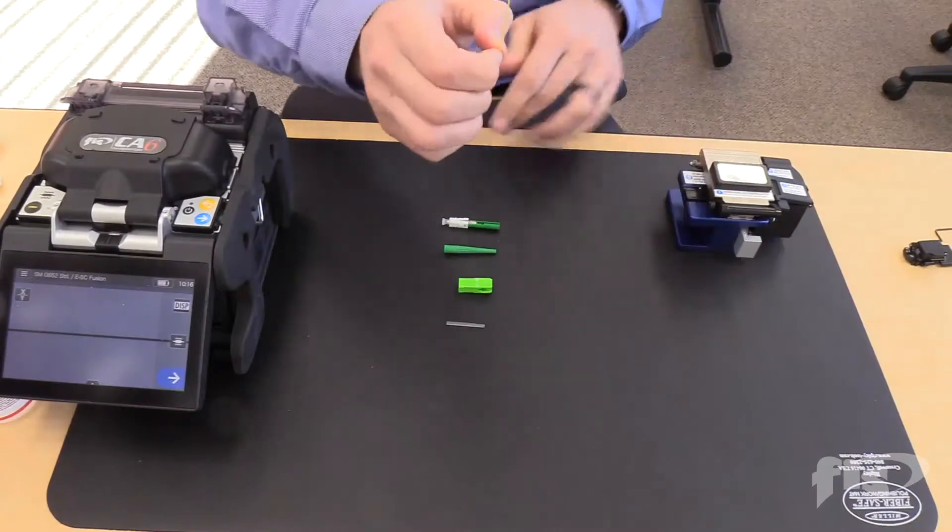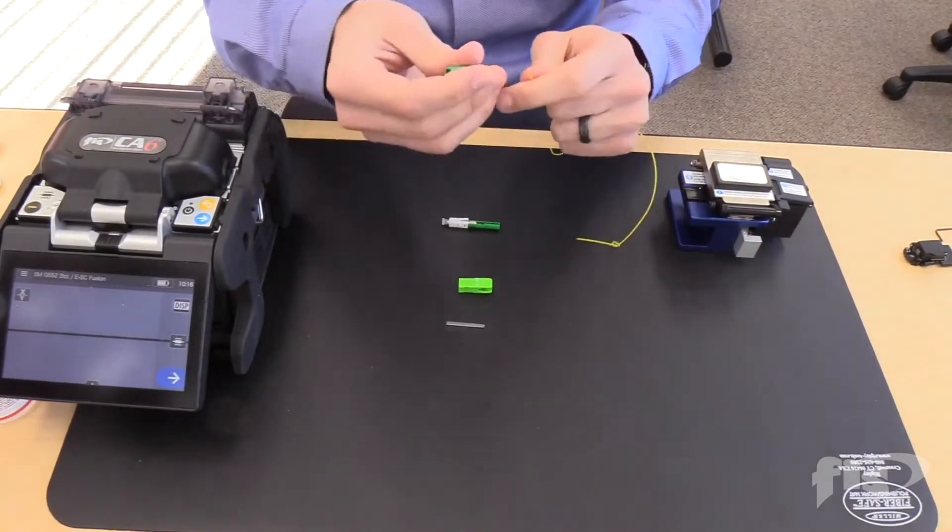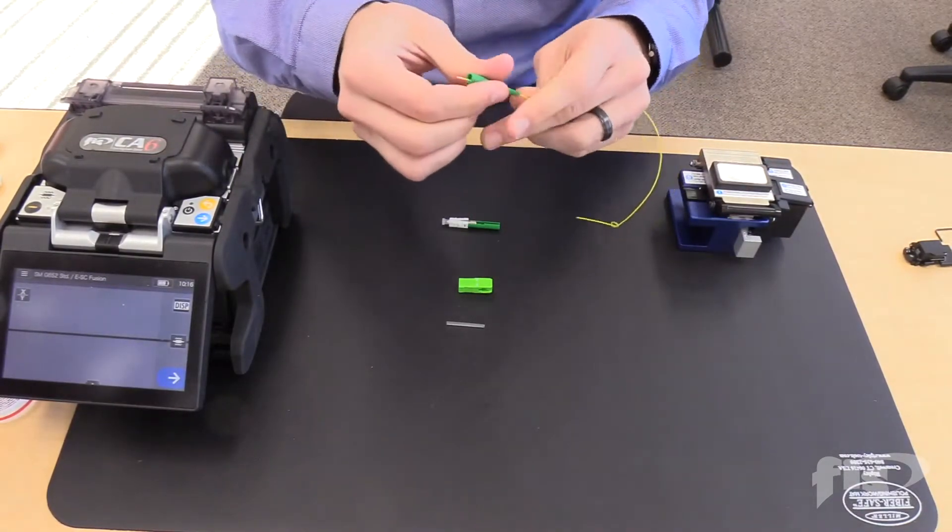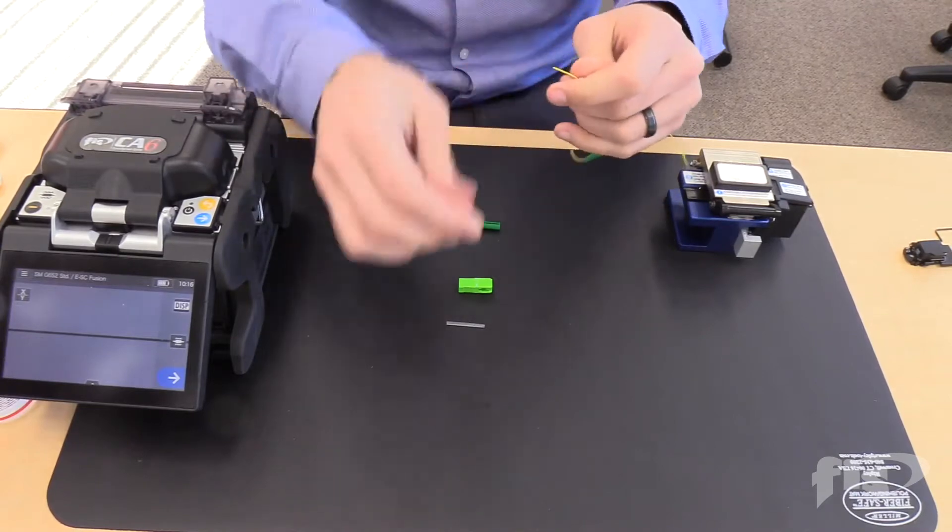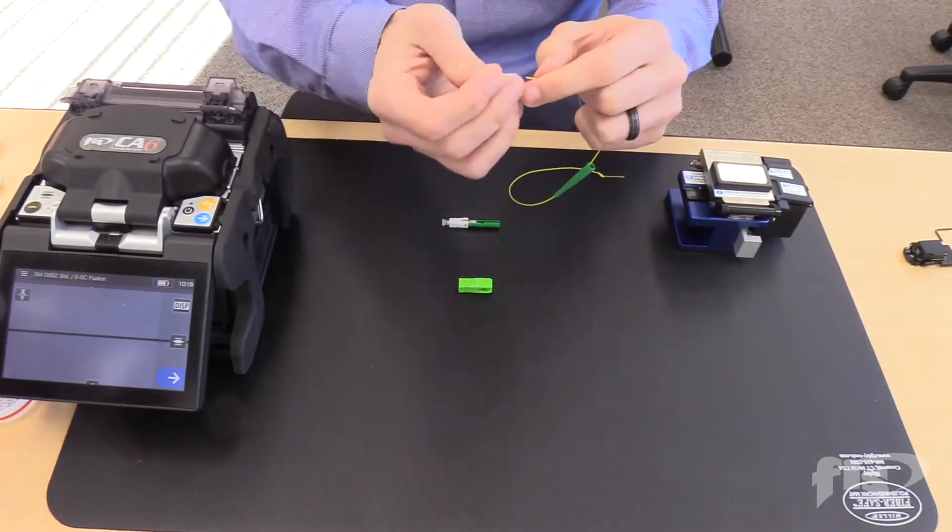Take the field fiber and assemble the back of the connector. First, slide the 900 micron boot. Then slide the 27mm splice sleeve.